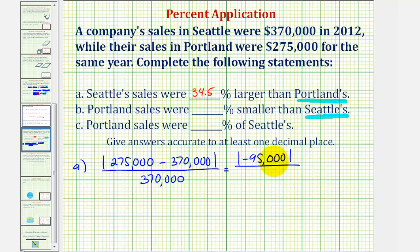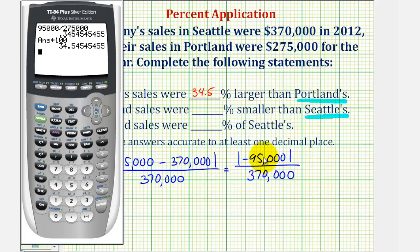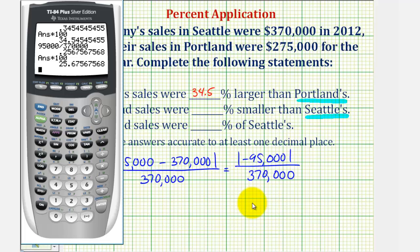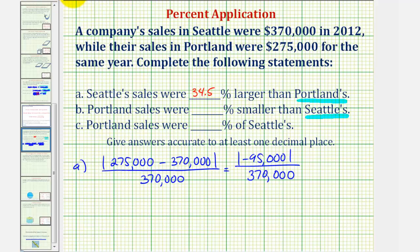Here we have the absolute value of negative 95,000 — the negative inside the absolute value is the reason why we know Portland's sales were smaller. Converting to a decimal and then to a percent: the absolute value is still positive 95,000 divided by 370,000, times 100. Rounding to one decimal place — the seven in the hundredths place indicates round up — so this is approximately 25.7%. Portland's sales were approximately 25.7% smaller than Seattle's sales.